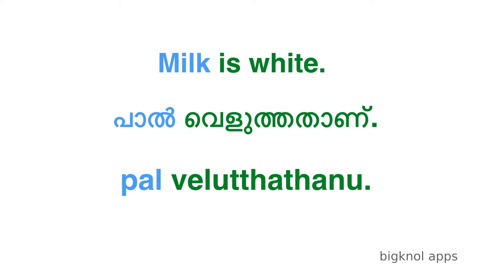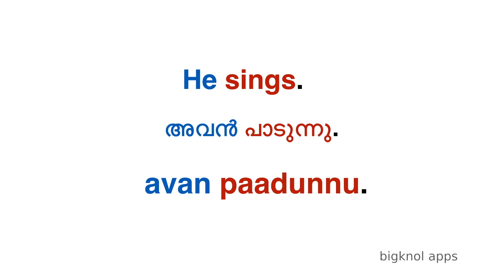Paal means 'milk,' vilutthana is a combination of 'is' and 'white.' He sings: avan paadnu. Avan means 'he,' and paadnu means 'sings.'